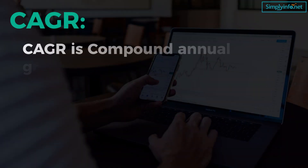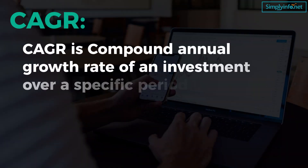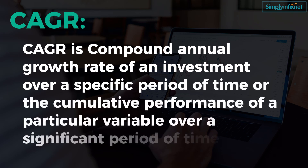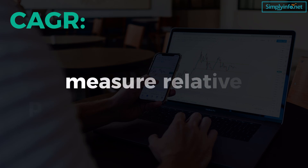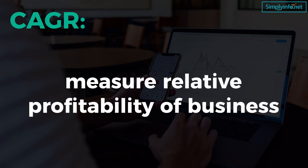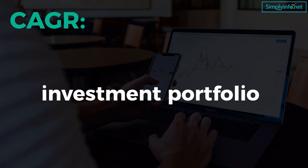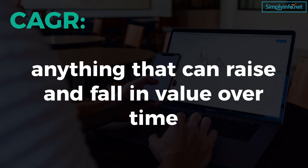CAGR is the compound annual growth rate of an investment over a specific period of time, or the cumulative performance of a particular variable over a significant period of time. It is used to measure relative profitability of a business, determine returns for individual assets, investment portfolio, and anything that can rise and fall in value over time.